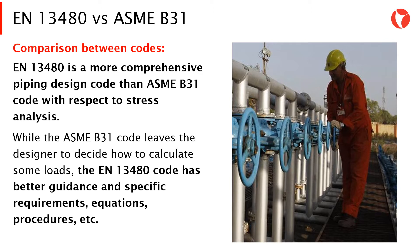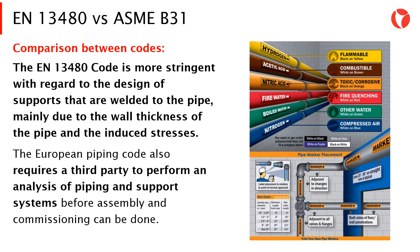While the ASME B31 code leaves the designer to decide how to calculate some loads, the EN 13480 code has better guidance and specific requirements, equations, procedures, etc. The EN 13480 code is more stringent with regard to the design of supports that are welded to the pipe, mainly due to the wall thickness of the pipe and the induced stresses.